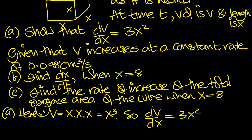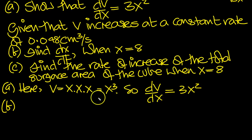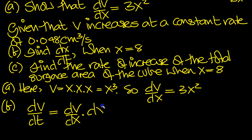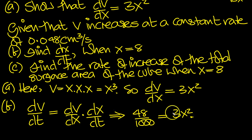V increases at a constant rate of 0.048. So part b, find dx/dt. dv/dt is equal to dv/dx using the chain rule times dx/dt. So dv/dt, which is 0.048, and we can write that as 48 over 1000, is equal to dv/dx, which is 3x squared, times dx/dt.